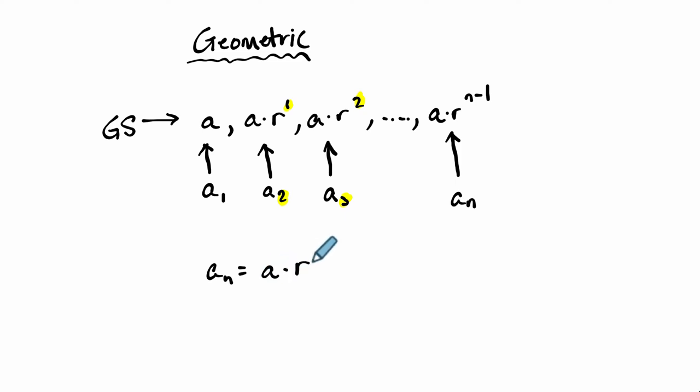So in general, we use this definition for the nth step of a geometric sequence. We start off at A and multiply it by some common ratio, n minus 1 times.